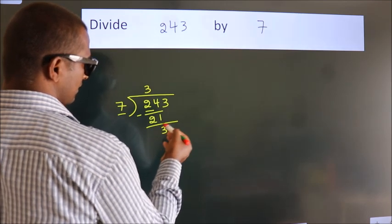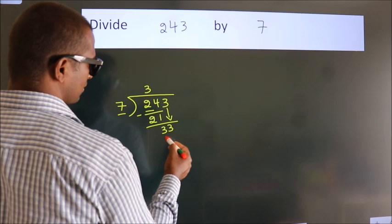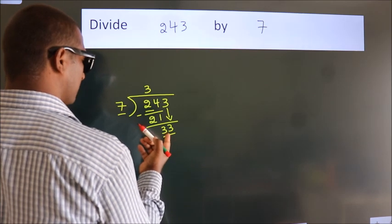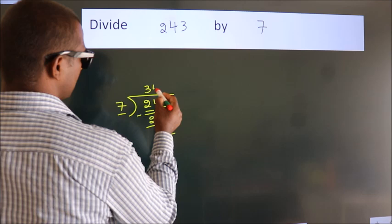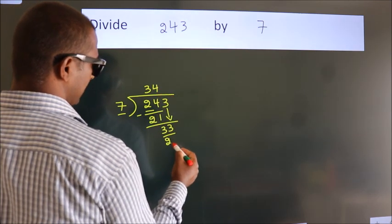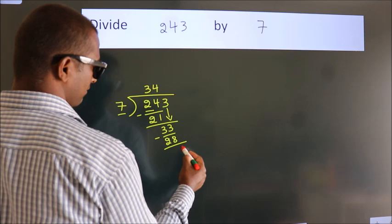After this, bring down the beside number. So 3 down, so 33. A number close to 33 in the 7 table is 7 fours, 28. Now we subtract. We get 5.